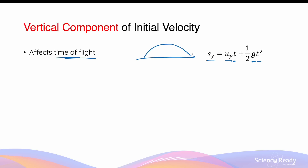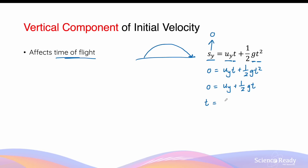For a full-flight parabolic motion where the object returns to the same vertical displacement as where it started, sy equals zero. The equation simplifies to: 0 = uy·t + half·g·t². Dividing both sides by t gives: 0 = uy + half·g·t, which rearranges to t = −2uy / g.